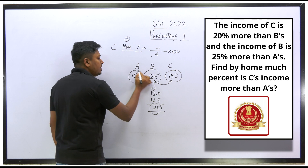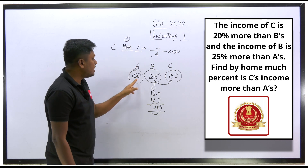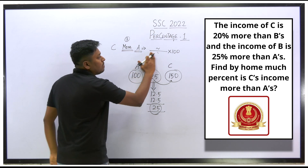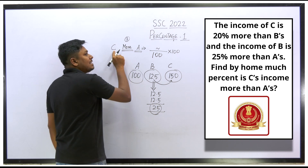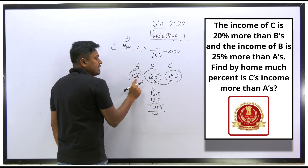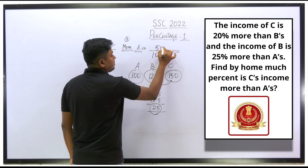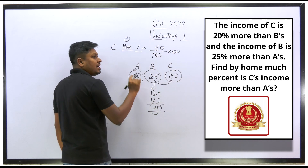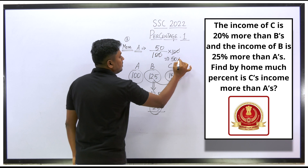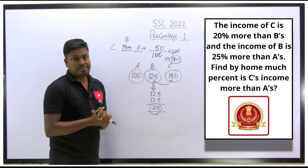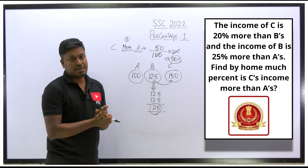Now comparing C and A: C = 150, A = 100. Difference = 50. So (50/100) × 100 = 50%. C's income is 50% more than A's income.